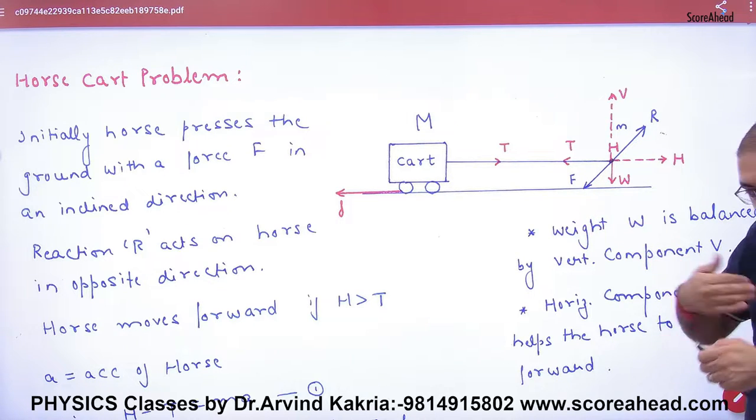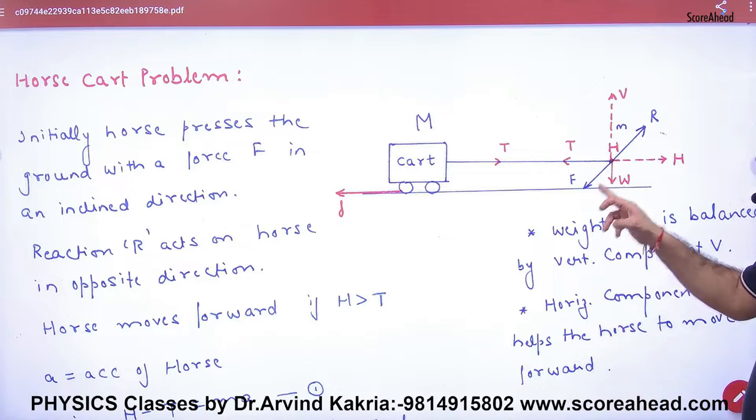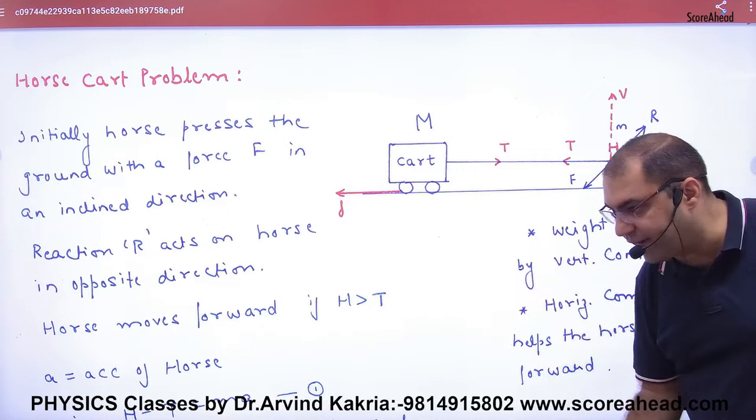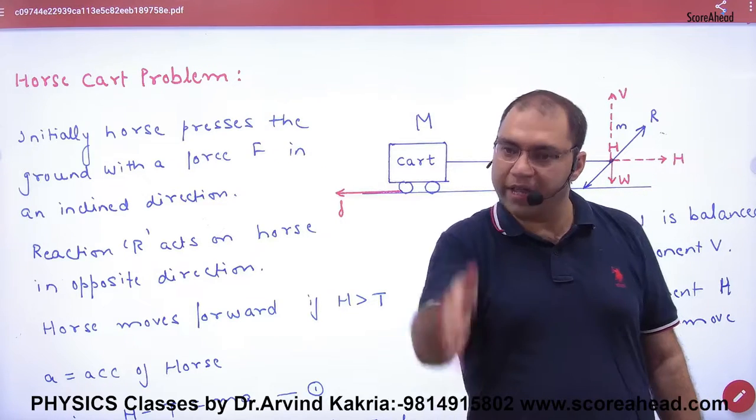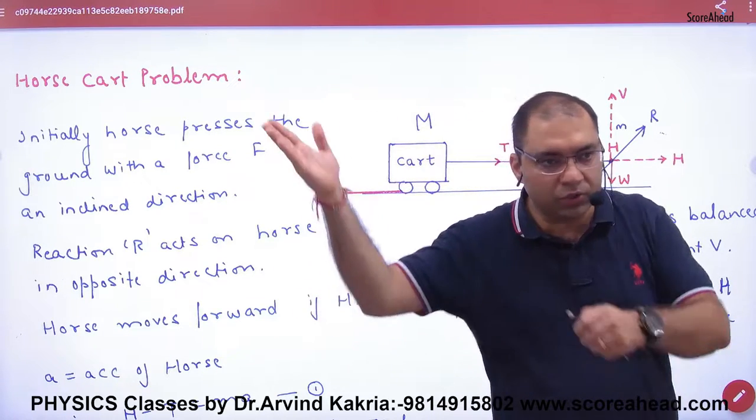When the horse is running, the normal reaction is at an angle because the horse leans forward, not vertical. When the horse is standing, the normal reaction is vertical. When running, it's at an angle.